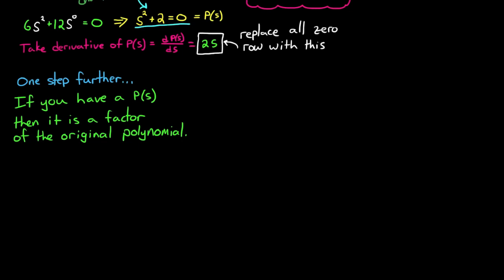So I can write this in an equation like this. The auxiliary polynomial p of s times some other polynomial equals the original polynomial q. And this is powerful in determining how many roots exist in the left-half plane, the right-half plane, and on the j-omega axis.